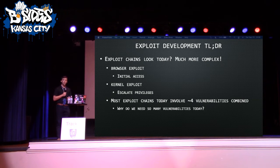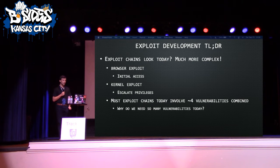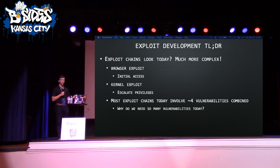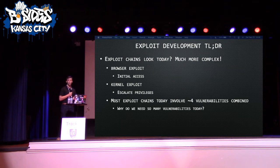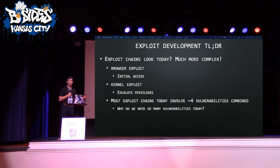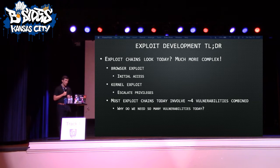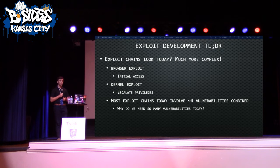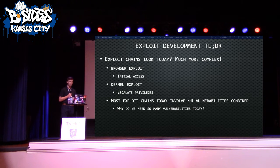That's more trivial exploitation today — not really how things look for the most part. That's not to say you can't find stack buffer overflows today, but most exploit chains consist of two components: a browser exploit, since everyone uses a browser making it a viable target — used for initial access because browsers today are sandboxed — and then an adversary may complement that with a kernel exploit to break out of the sandbox and escalate privileges. Adversaries have had to get creative because of exploit mitigations, and must chain multiple vulnerabilities together to achieve objectives.